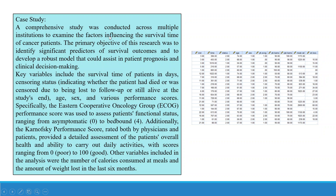Now let's take one case study. A comprehensive study was conducted across multiple institutions to examine the factors influencing the survival time of cancer patients. The primary objective was to identify significant predictors of survival outcomes and to develop a robust model to assist in patient prognosis and clinical decision making. Key variables include the survival time of patients in days, and a censoring status indicator showing whether the patient had died or was censored due to being lost to follow-up or still alive at the study's end. Other predictor variables are age, gender, and various performance scores.